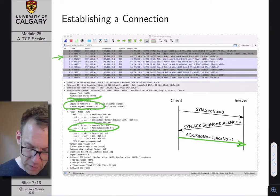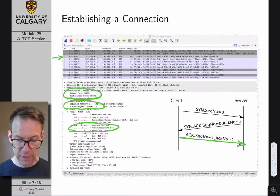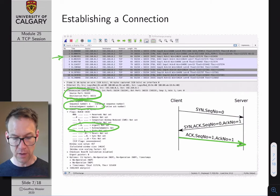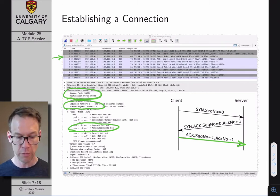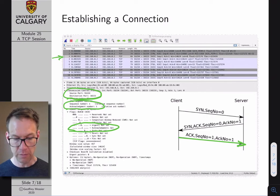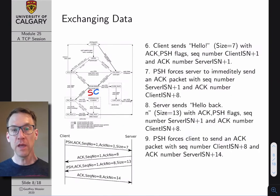For example, we can see the source port and the destination port set up here. The destination port is 10223, because I generated this TCP trace using a socket program that I assigned to a random, non-reserved port. The source port would have been chosen by the operating system.